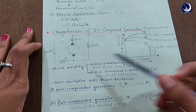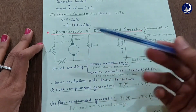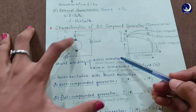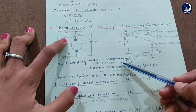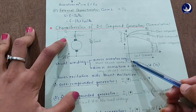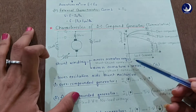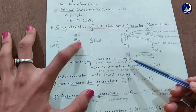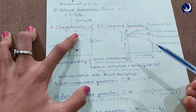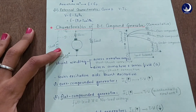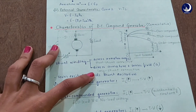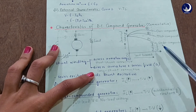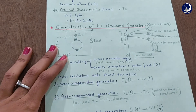The shunt winding can be connected in two ways. If you connect it across the armature only, that is the short shunt connection, denoted by capital S. If you connect the shunt winding across both the armature and the series field, we call it the long shunt connection, denoted by capital G. This graph shows the characteristics of the DC compound generator.